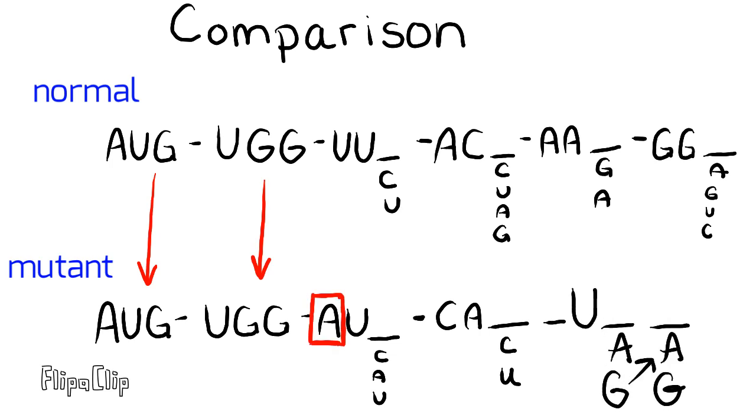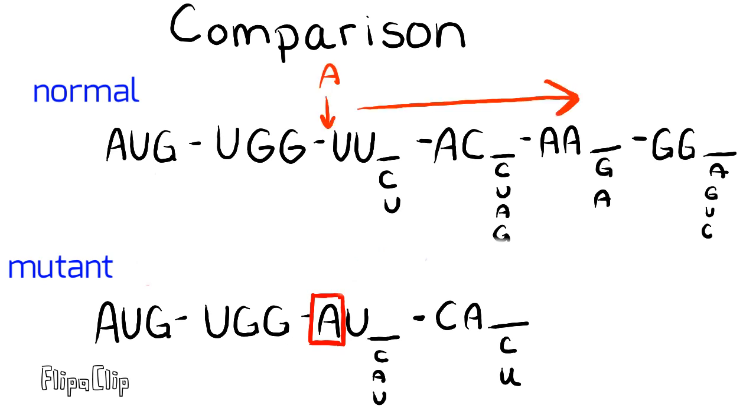The first difference between the two strands is the adenine in the mutant strand. If we add this adenine to the normal strand, the following base pairs would shift to the right. This shift causes the normal strand to become the mutant strand.